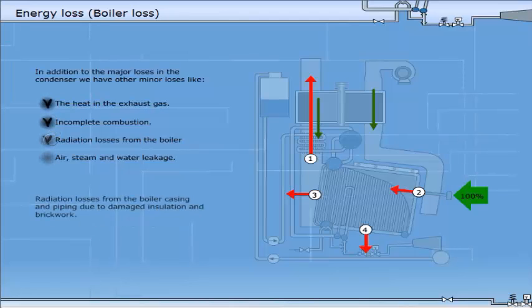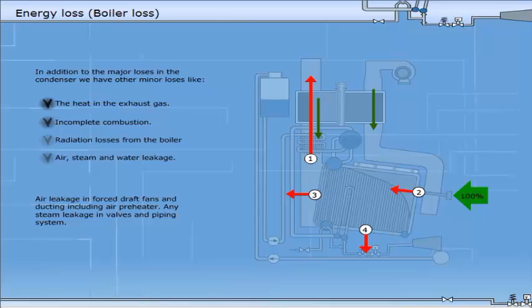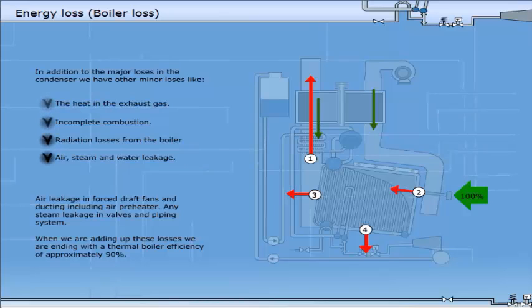Radiation losses from the boiler casing and piping due to damaged insulation and brickwork. Air leakage in forced draft fans and ducting including air preheater. Any steam leakage in valves and piping system. When we add up these losses, we end up with a thermal boiler efficiency of approximately 90%.